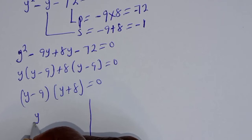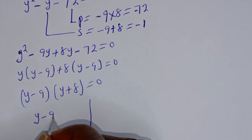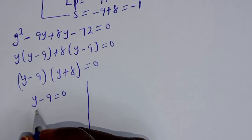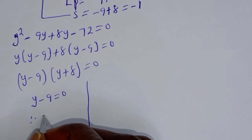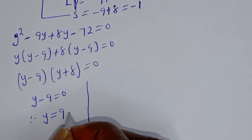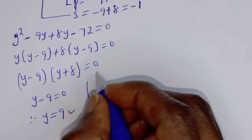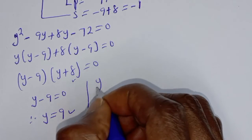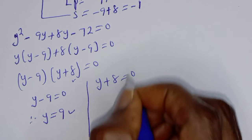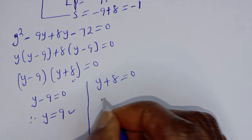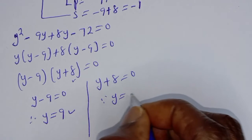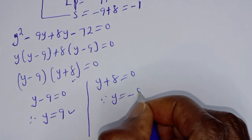Then (y minus 9) is common: (y minus 9)(y plus 8) is equal to 0. There are two cases. First case: y minus 9 equals 0, therefore y equals 9. Second case: y plus 8 equals 0, therefore y equals minus 8.